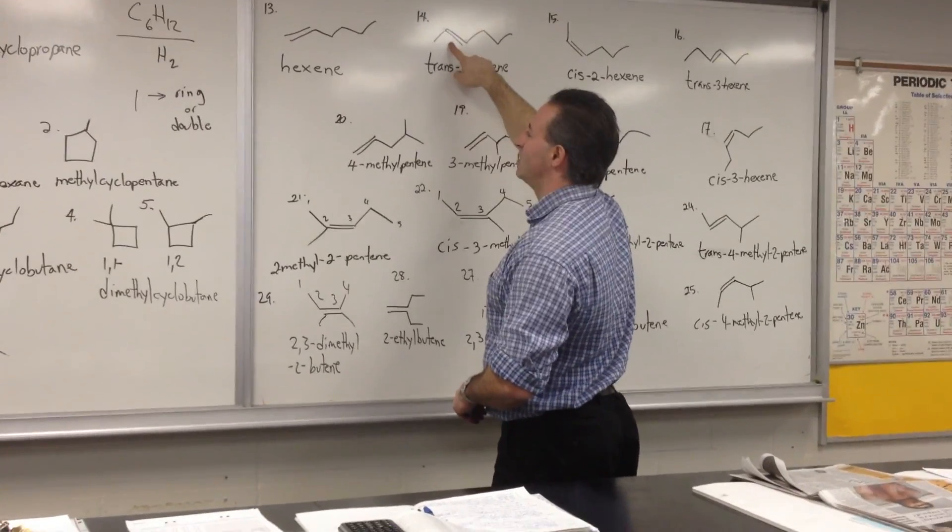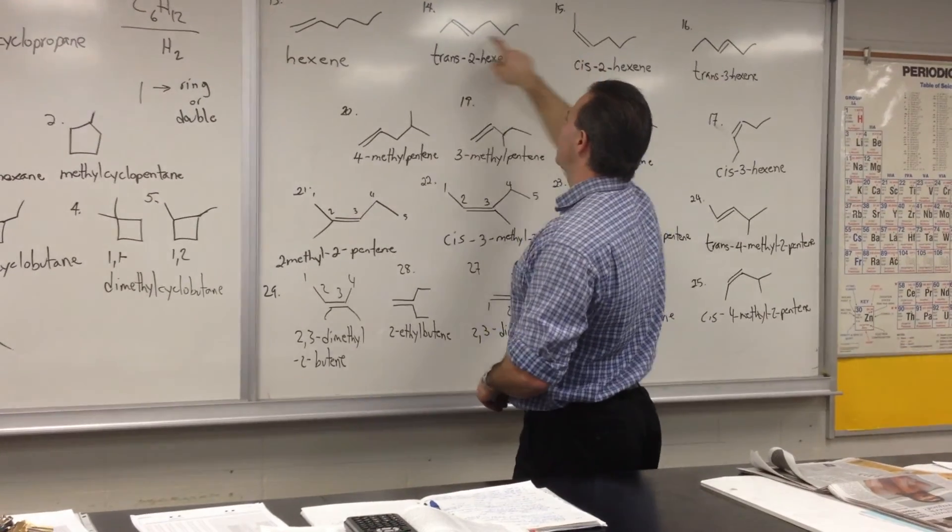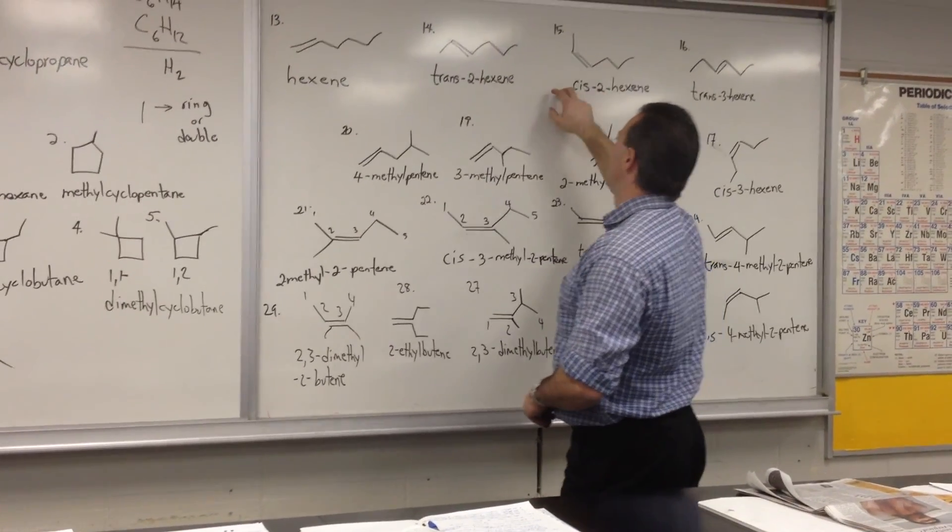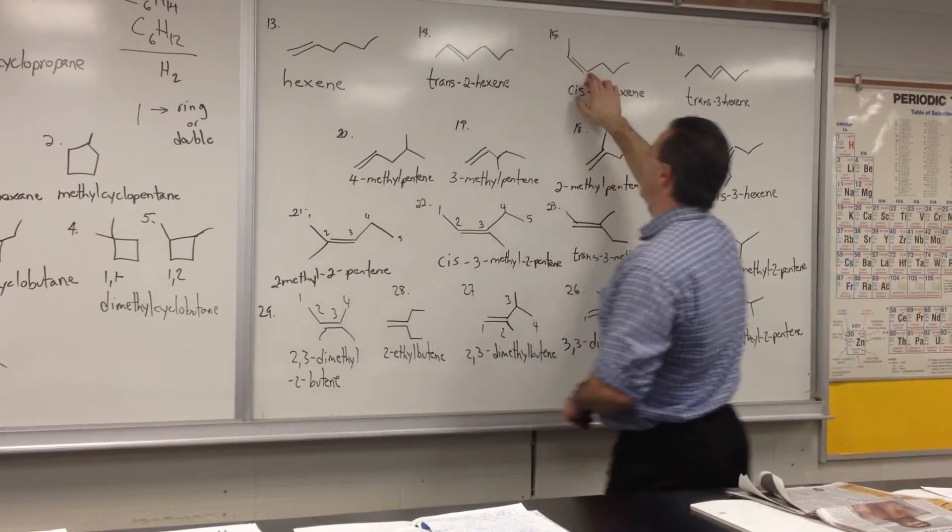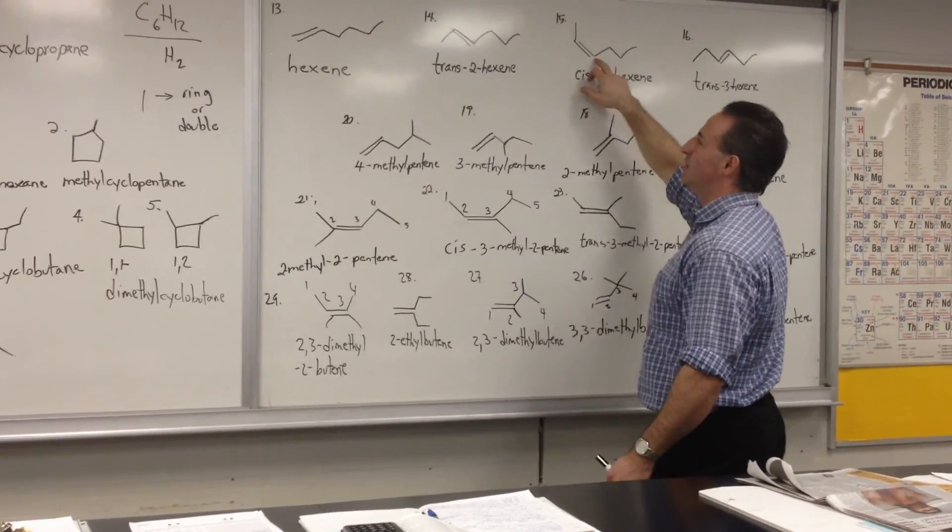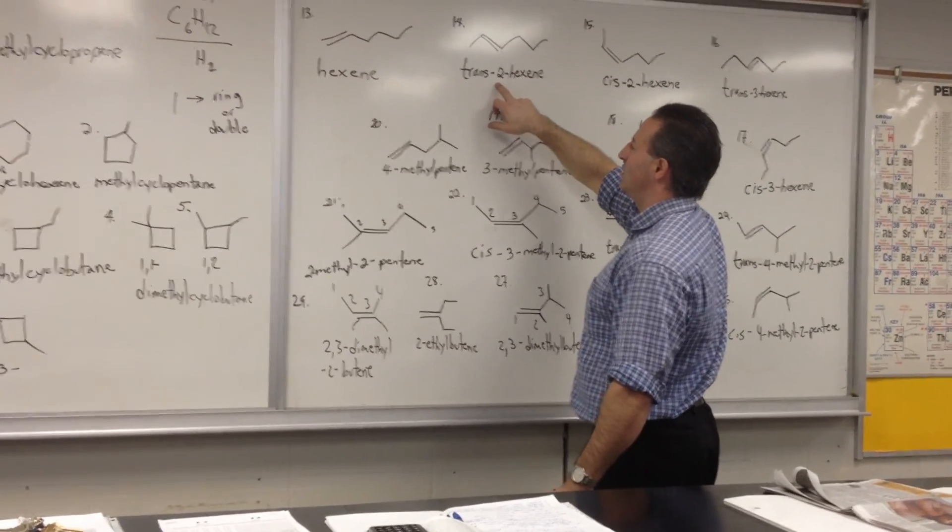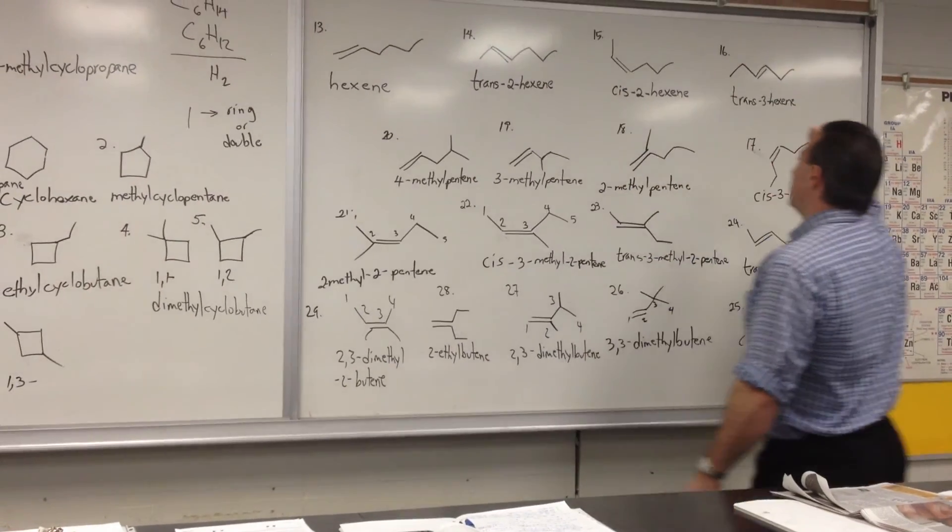Now because the double bond is rigid, it presents you with two possible isomers, cis and trans. Cis is when both substituents are on the same side of the double bond. Trans is when they're on opposite sides.